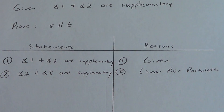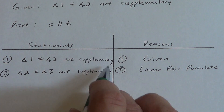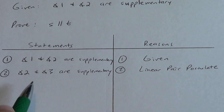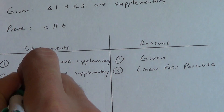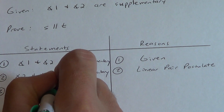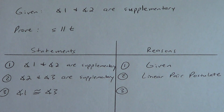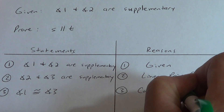Now this is a theorem we don't use a lot, but it's going to come in real handy right here. If two angles — in this case angles 1 and 3 — are supplementary to the same angle (that angle being angle 2), then those two angles have to be congruent to each other. So angle 1 is congruent to angle 3. Do you remember why? It's called the congruent supplements theorem.